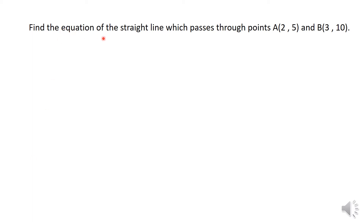Here is another example: find the equation of a straight line which passes through points A(2, 5) and B(3, 10). Here we have two points and we are asked to find the equation of the line. When you have two points, first of all you have to find the gradient between the two points.